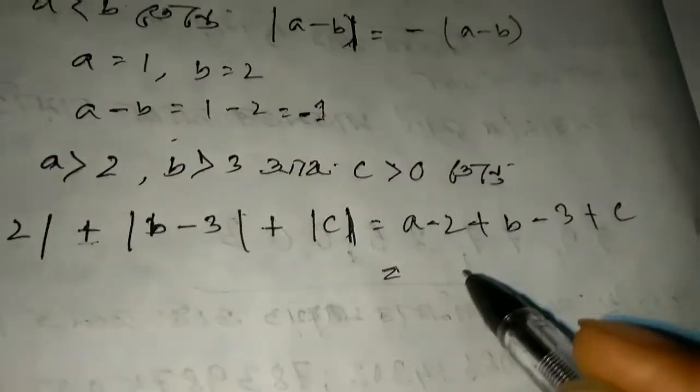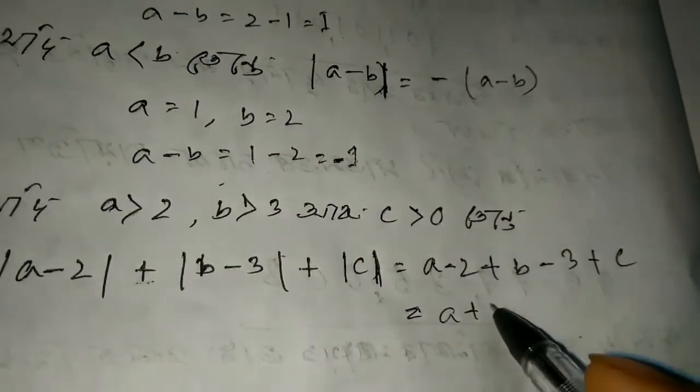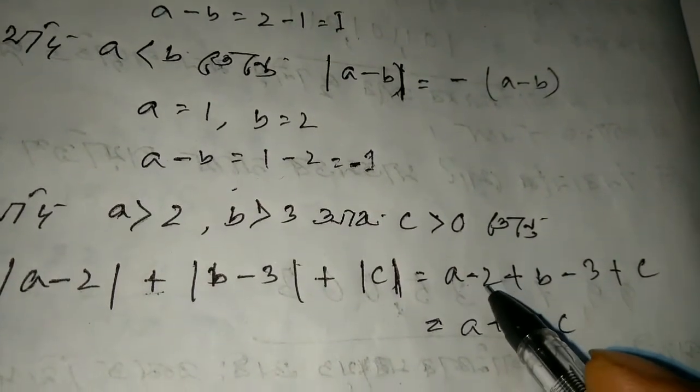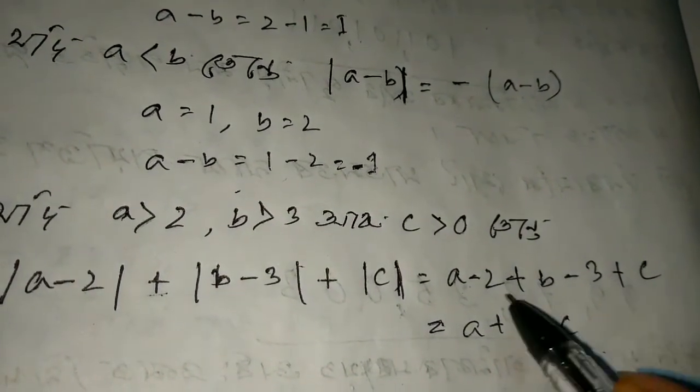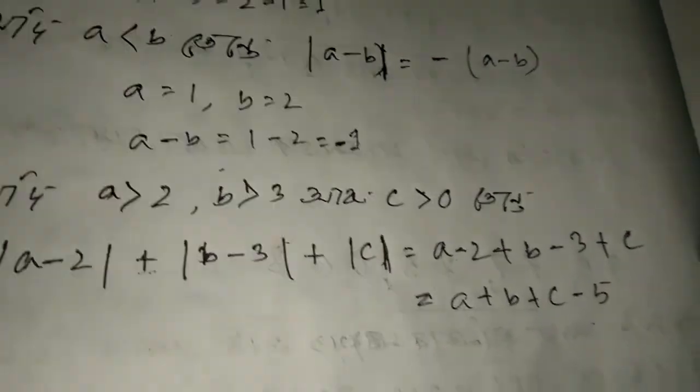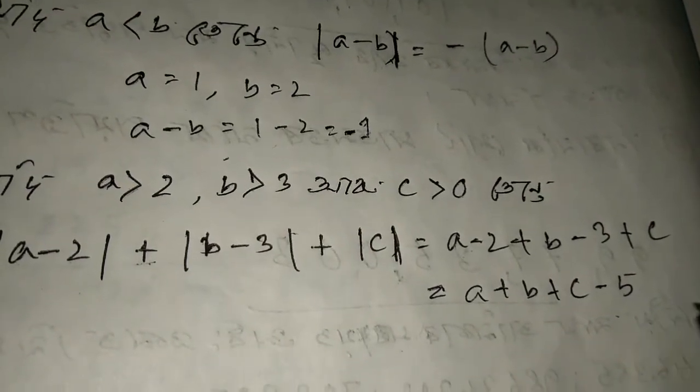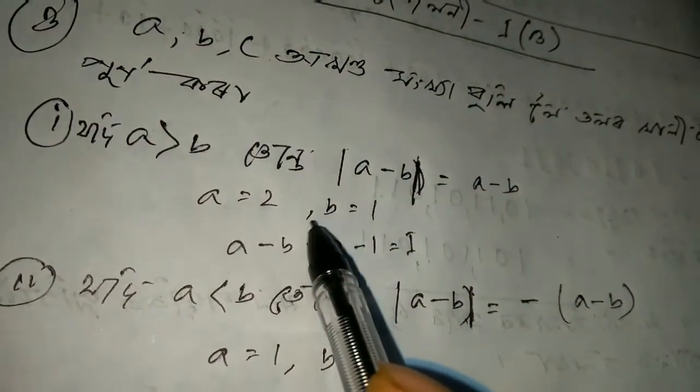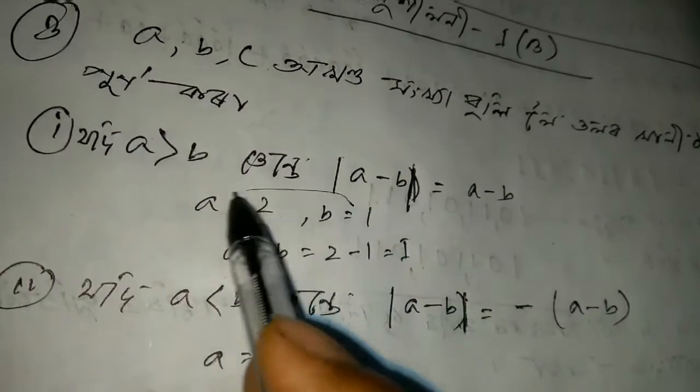So A, B, C is A plus B plus C. This is A minus two, so this gives us A plus B plus C minus 5.